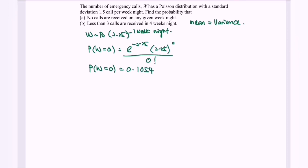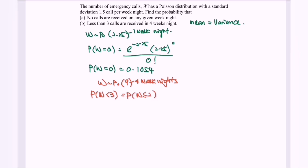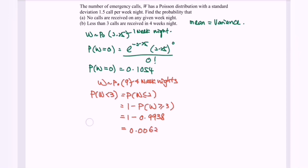For part B, probability of less than 3 calls received in 4 weeknights. Change the parameter: W ~ Poisson(2.25 × 4) = Poisson(9). Modify the question to P(W ≤ 2). Using the statistical table, rewrite as 1 minus P(W ≥ 3) = 1 minus 0.9938, giving a probability of 0.0062.